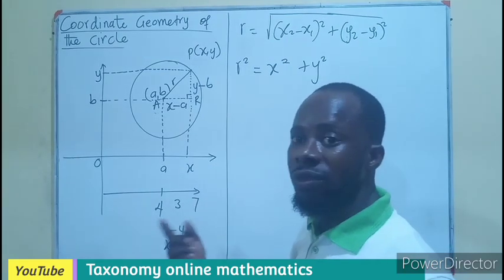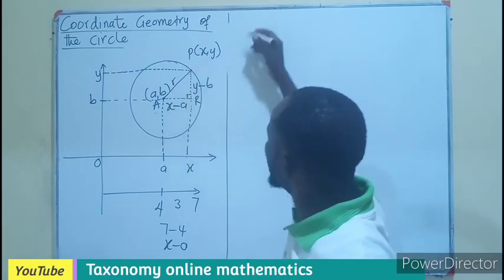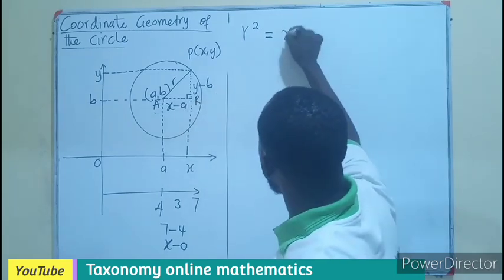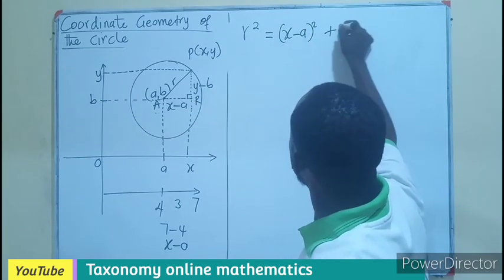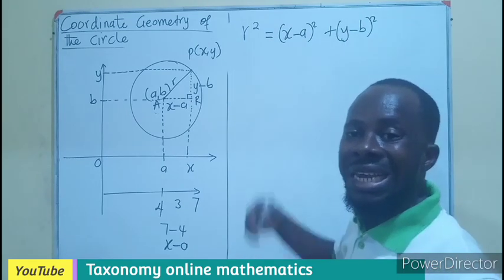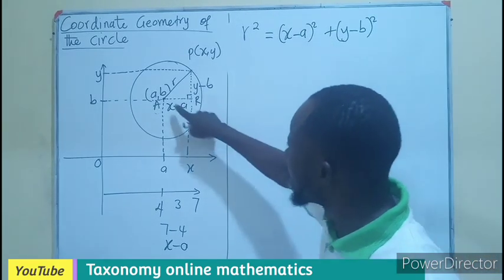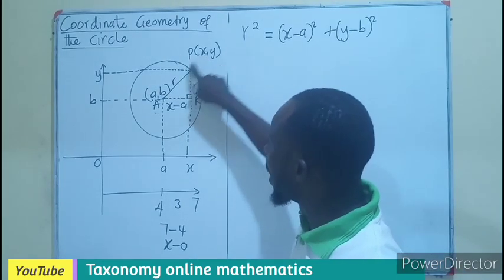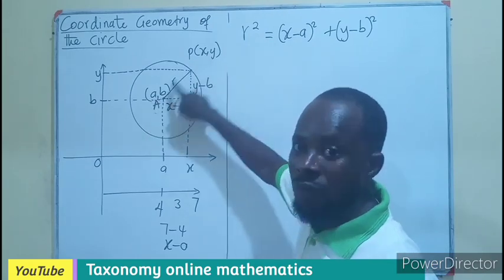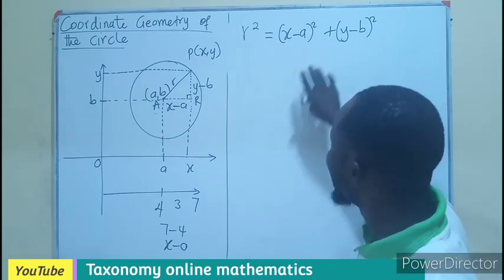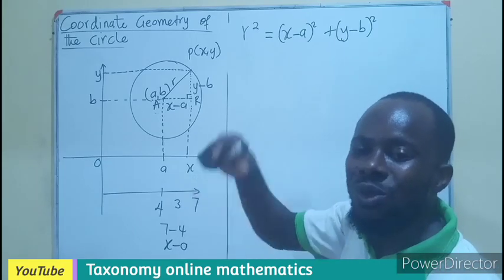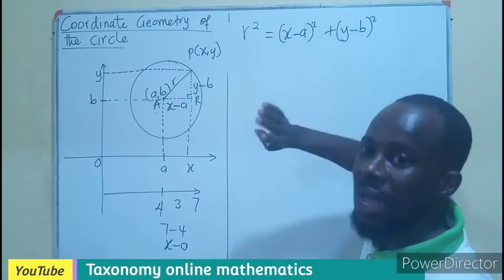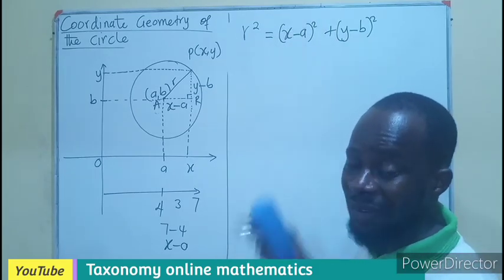Taking the Pythagorean theorem into consideration, the longer side r squared equals the sum of the squares of the two shorter sides: r squared equals (x minus a) squared plus (y minus b) squared. This is the equation of a circle when the center is not the origin. We can also derive the same result using the distance formula with coordinates (x1, y1) and (x2, y2), which gives the same equation.